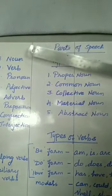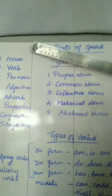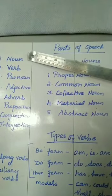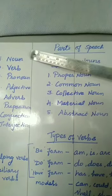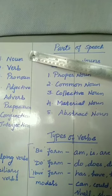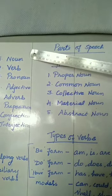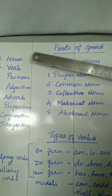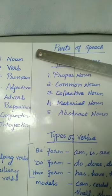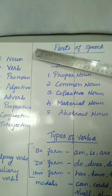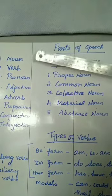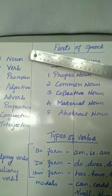Now let us see what is a noun. As we all know, noun is a naming word. It can be the name of a person, it can be the name of a place, a thing, an animal, or even sometimes an idea. All naming words are called as nouns. For example: boy, fan, table, Babu, Tamilnadu, tiger, parrot. All these are naming words, so they are called as nouns.